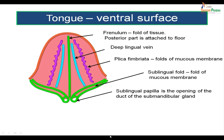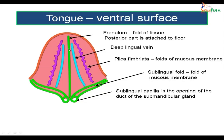Now let's look at the ventral surface of the tongue — if you lift the tongue upwards, this is what you will see. The midline shows a fold of tissue called the frenulum. The posterior part of the frenulum is attached to the floor of the mouth, while normally the anterior portions of the frenulum are free. The deep lingual vein is present lateral to the frenulum, and the darkish blue discoloration of the lingual veins is visible on either side of the frenulum through the thin mucous membrane.